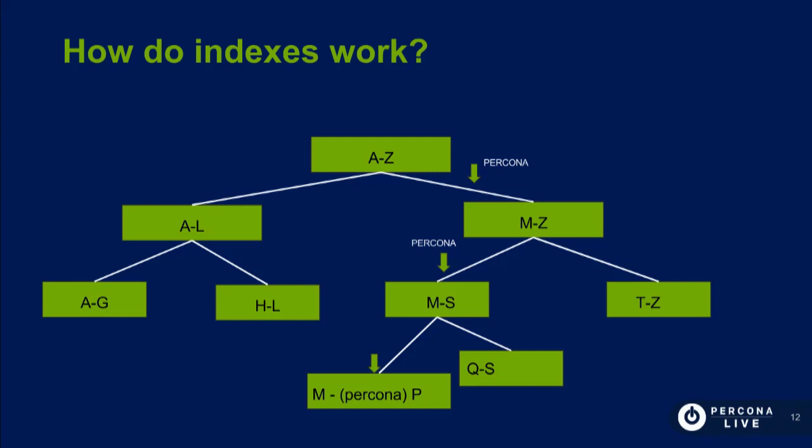What the query optimizer does is walk through this tree and say: is P more than A to Z? No, it's more than M to Z. So it's in the left. Instead of reading the entire collection — all documents — it gets a shortcut. It takes advantage of the B-tree to find the document quickly. So instead of reading a thousand documents, all the database needs to do is walk through the B-tree.